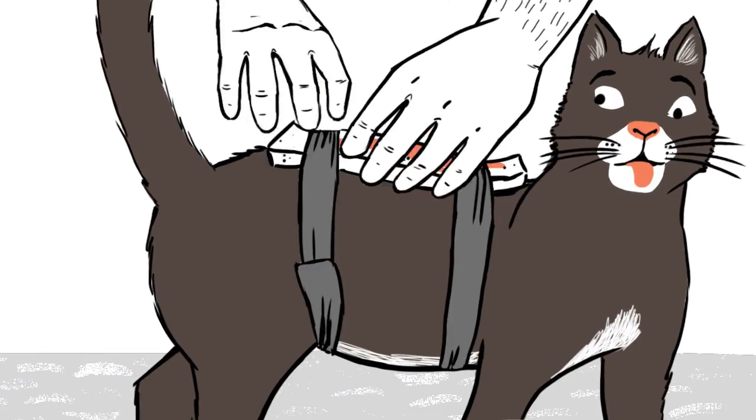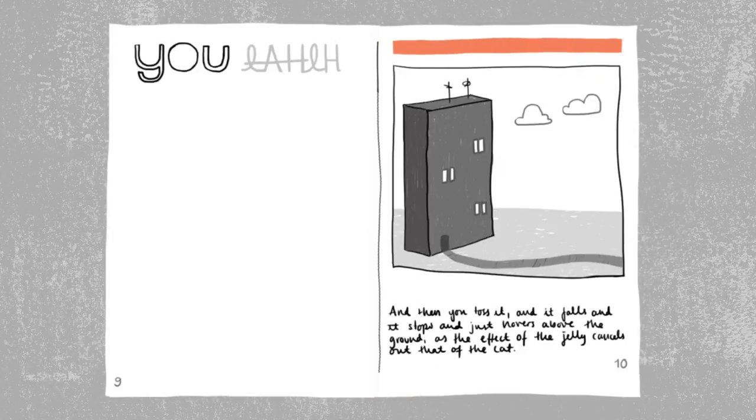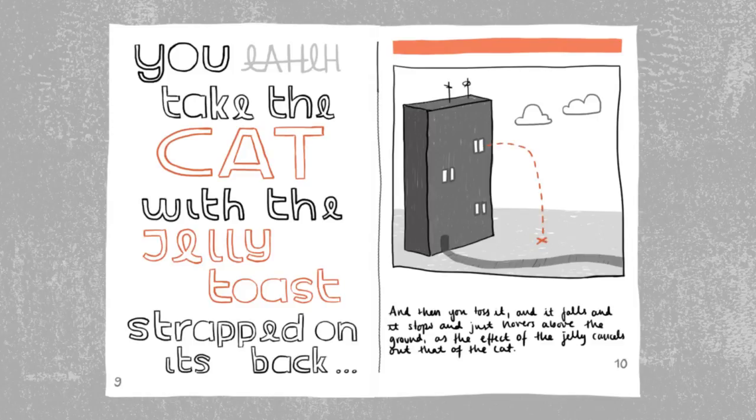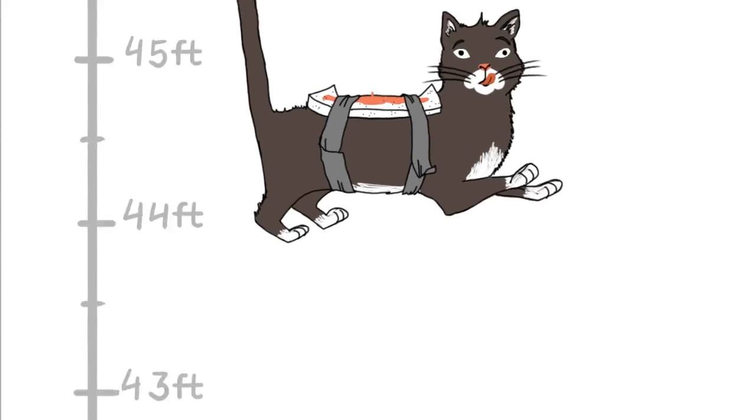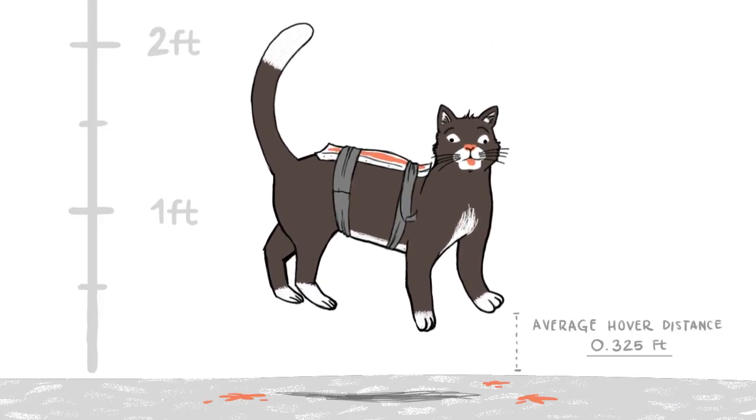So you strap jelly toast to the back of a cat, thinking they might cancel each other out. And so there's a research paper on it that says you take the cat with the jelly toast strapped on its back, and then you toss it, and it falls, and then it stops, and then it hovers above the ground.